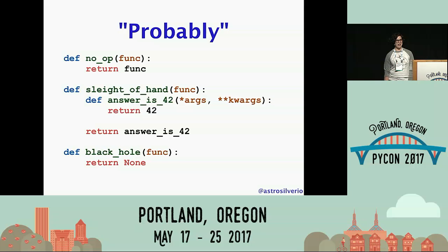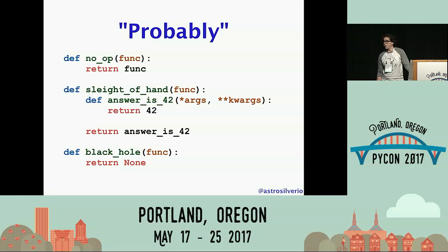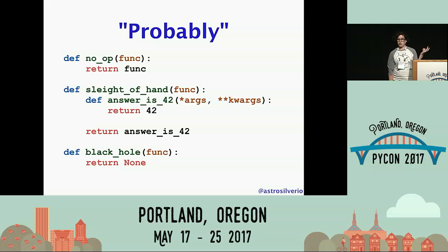I used the word 'probably' a lot on that last slide because there's really quite a lot of leeway in terms of what decorators can do. The only requirement for the code to compile is that the decorator takes a single argument. I don't actually have to define anything new in the decorator — I could, for example, decorate a function with a noop decorator that just takes a function and returns the same function, so it wouldn't change the thing it decorates. Seems mostly useless, but I tested it in a REPL and it works.